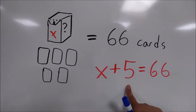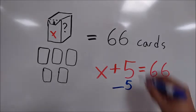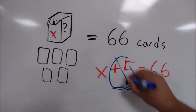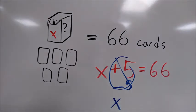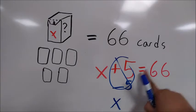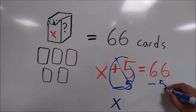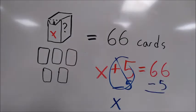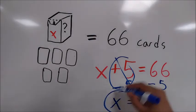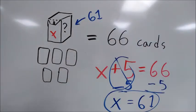So since we're adding 5, we're going to do the opposite of that. We're going to subtract 5. That cancels out, and there's nothing left but X. But whatever you do to one side of an equal sign, you have to keep balanced by doing to the other side, otherwise they're not equal anymore. So we're going to subtract 5 from the right side as well. That leaves us with 61. So that means X equals 61, and there are 61 cards in Alejandro's box.